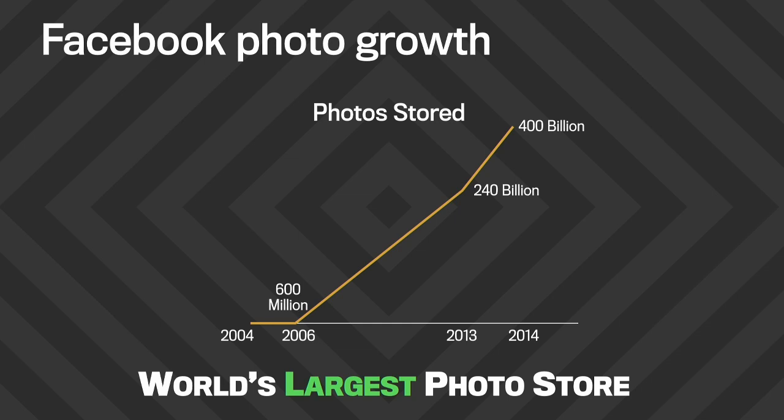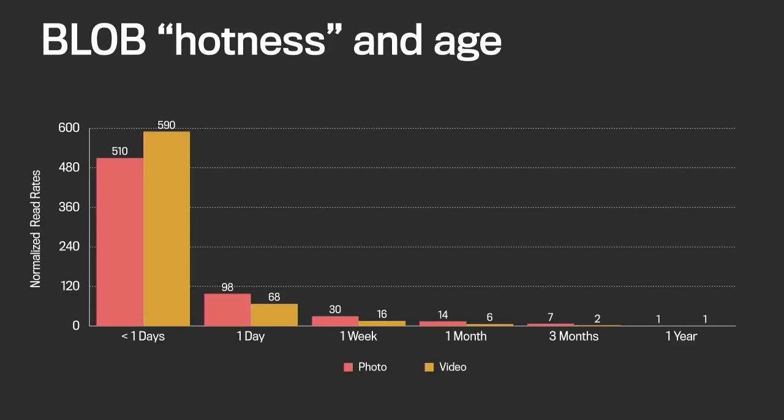So you might ask the question: is a photo uploaded in 2004 the same to our system as one uploaded yesterday? The answer turns out to be no, and this has an interesting property of access rate over time. Blobs actually cool down over time. On the x-axis we have blob age, from less than a day all the way up to one year, and on the y-axis we have a normalized read rate, normalized to one year. A photo uploaded in the last 24 hours will, in aggregate, receive 500 times the number of read requests today than it will a year from now, and the same is just as true of videos.